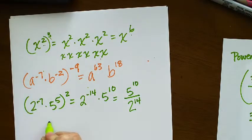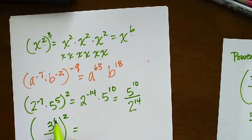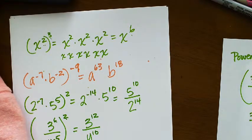Now I have 3 to the 6th over y to the negative 5 raised to the second power. I would do 6 times 2 for 12, 3 to the 12th. Negative 5 times 2 would be y to the 10th. And that is one of the choices.